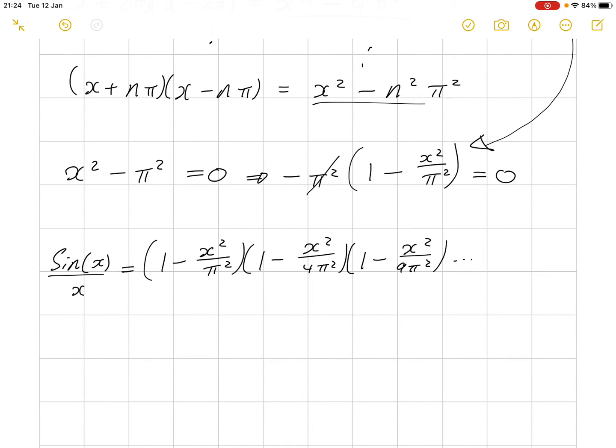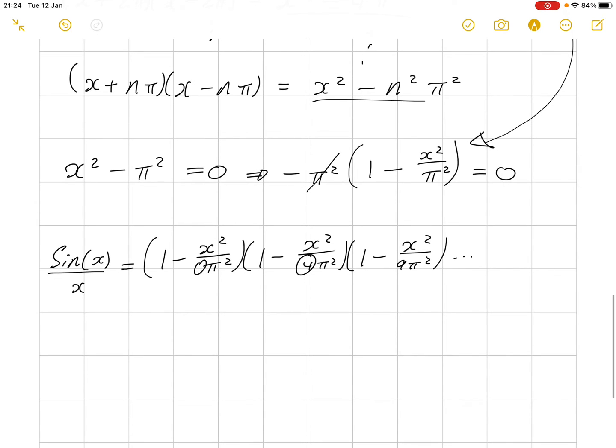And, now, you might start to notice where we've got 1 times pi squared, 4 times pi squared, you know, 1 squared, 2 squared, 3 squared, etc. So, you might start to notice a pattern here.